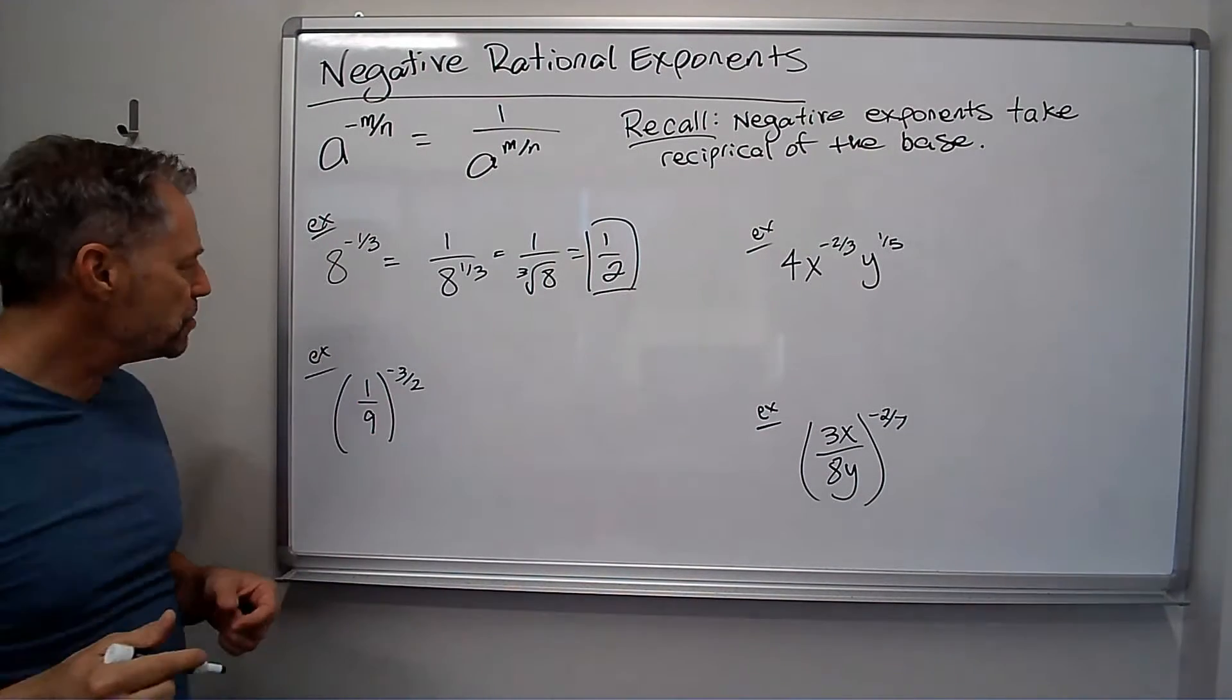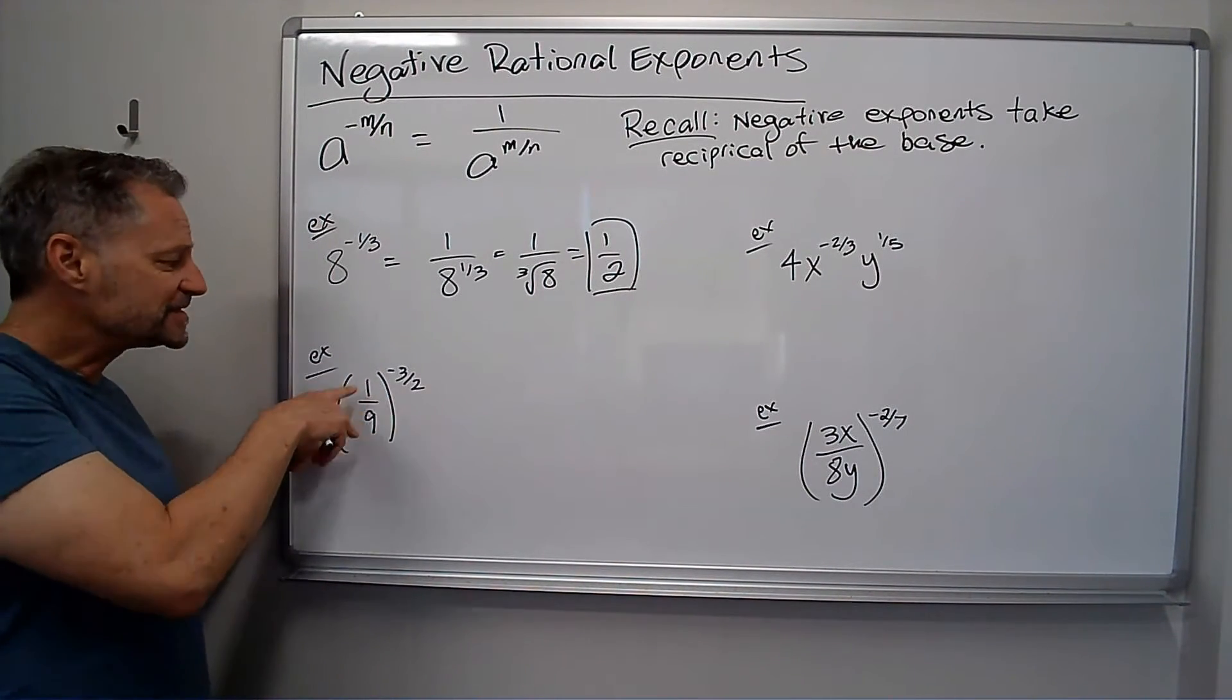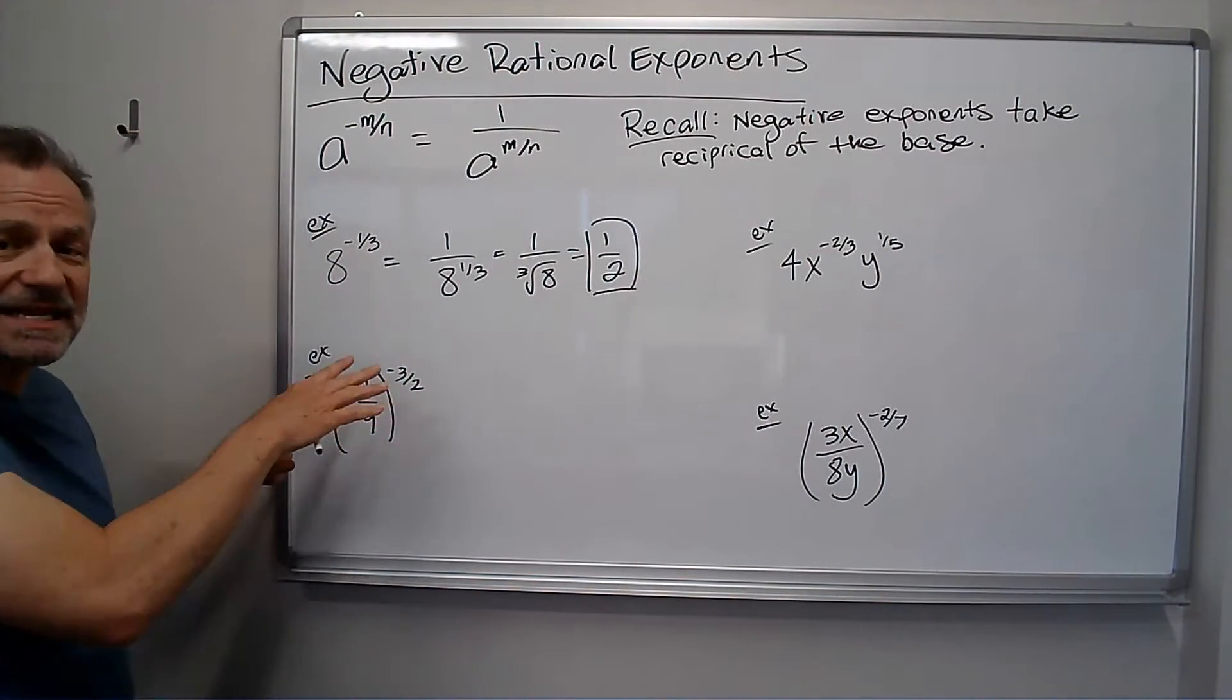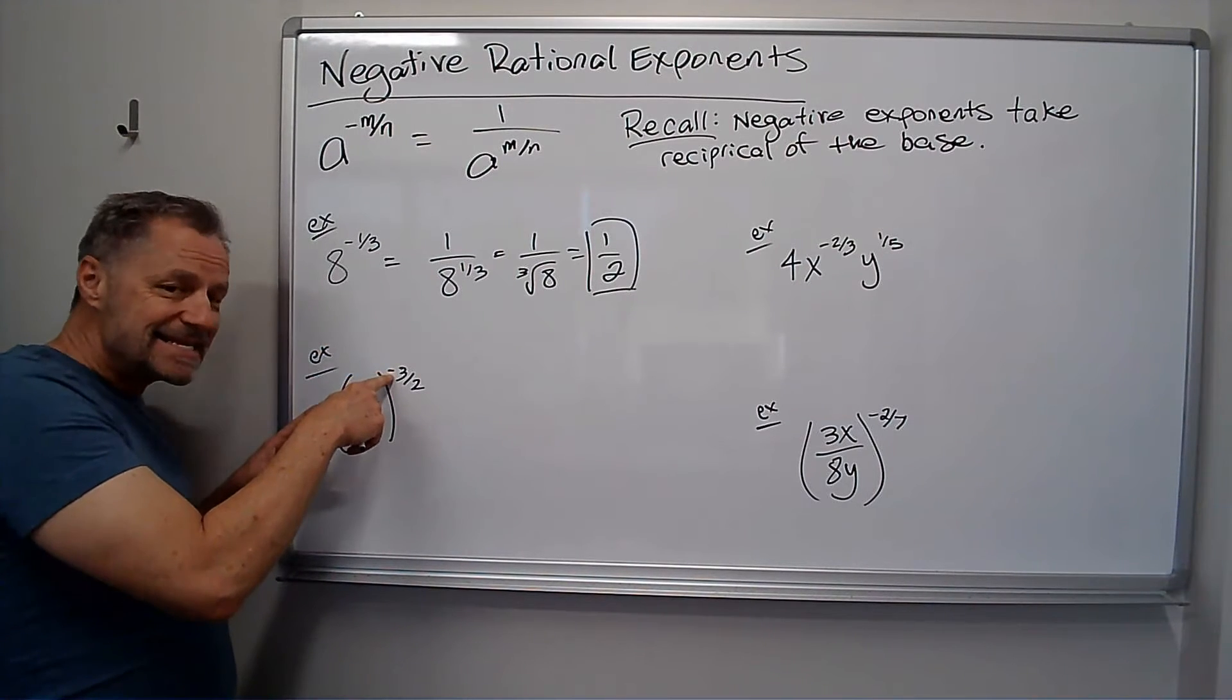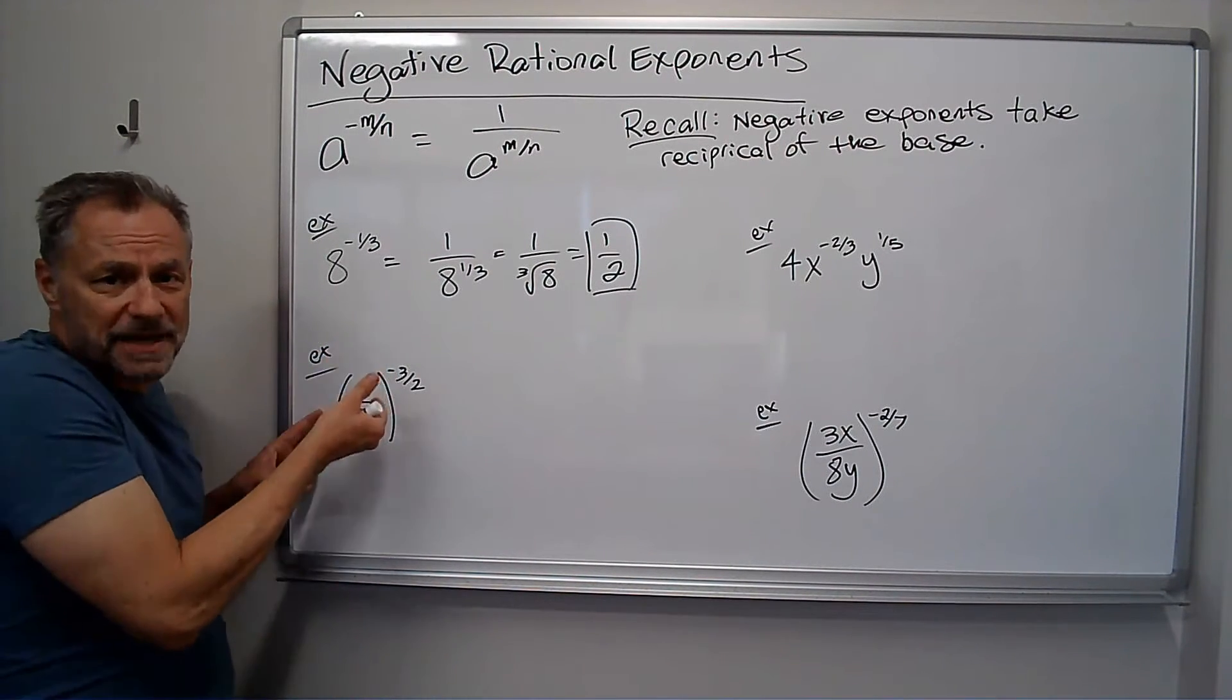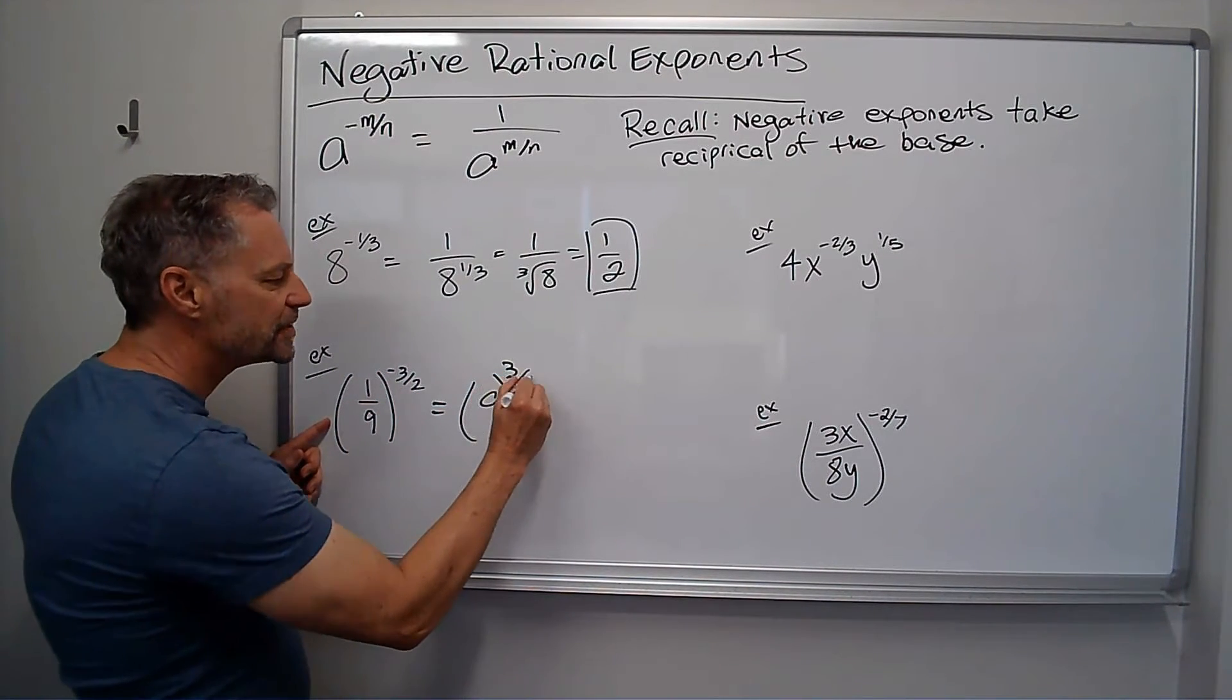Alright, try some more. Now I've got a fraction inside the parentheses, but raised to a negative power. The power is rational again, but that doesn't matter at this point, I'm just looking at the negative power. This negative disappears if I take the reciprocal of the base. Well, the reciprocal of the base of 1/9 is just 9, so this just becomes 9 raised to the 3/2.